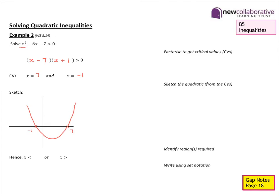Using the graph, we identify the solution set to the inequality. We want the quadratic function to be greater than zero, so we look at parts of the graph above the X-axis. The solution set is therefore X less than negative one or X greater than seven. In set notation: {X such that X < −1} or {X such that X > 7}.